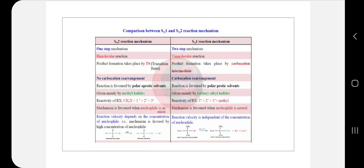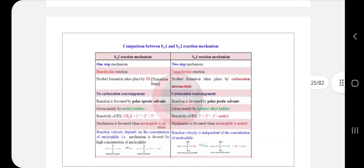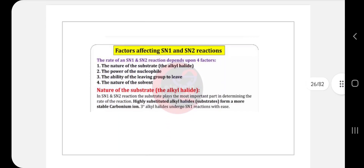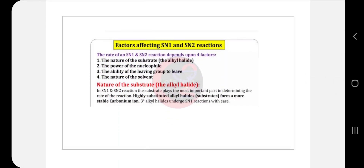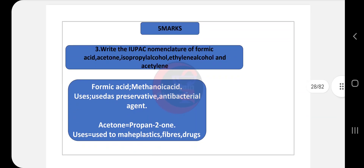Maintain a comparison — write at least four differences between SN1 and SN2. For a five-mark answer, write all SN1 and SN2 content, then the differences in a column format. Also write down and explain the factors affecting SN1 and SN2. For the five-mark IUPAC naming question, they asked: formic acid, acetone, isopropyl alcohol, ethylene alcohol, and acetylene. After writing IUPAC names, also write 2–3 uses for each compound.